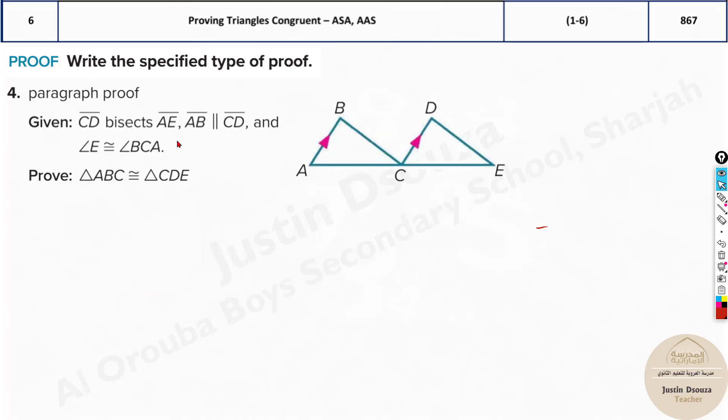Now what about this one? CD bisects AE, so this is congruent to this line because AE is bisected by CD. So AC and CE are equal. AB is parallel to CD, and angle E is congruent to angle BCA. Since these both are parallel, A and C are corresponding angles. So we have ASA again, and these two triangles are congruent to each other. You can see it's ASA congruency postulate.